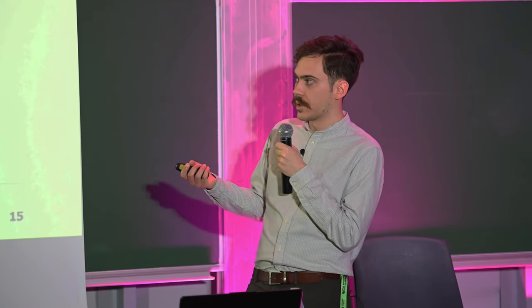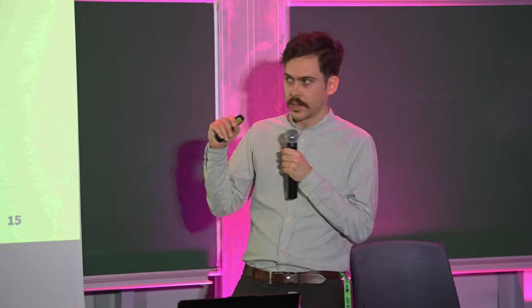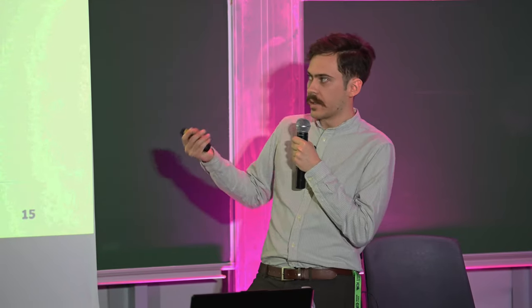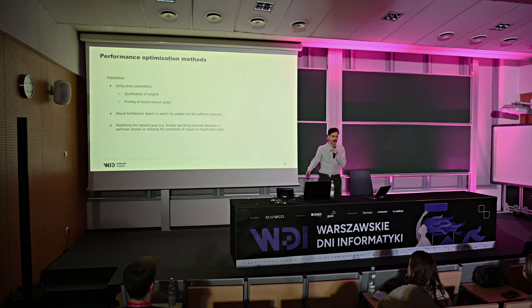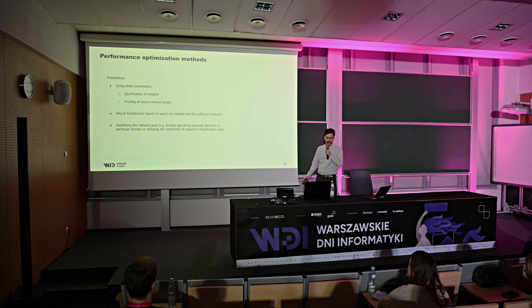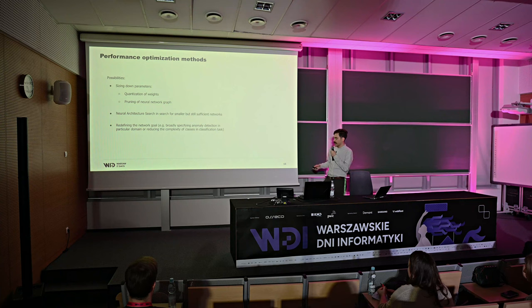We can also use neural architecture search methods to find smaller architectures — set limitations such as a maximum model weight of 500 megabytes, and search for an architecture that doesn't exceed that while still performing well. There is also the possibility to redefine the network goal. In satellite images, for example, we may only need to detect whether something is a dog, not identify the breed — so we don't need a huge model for that.